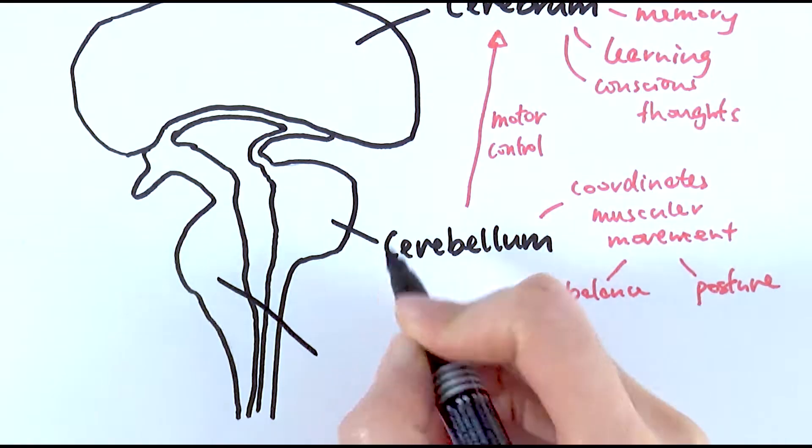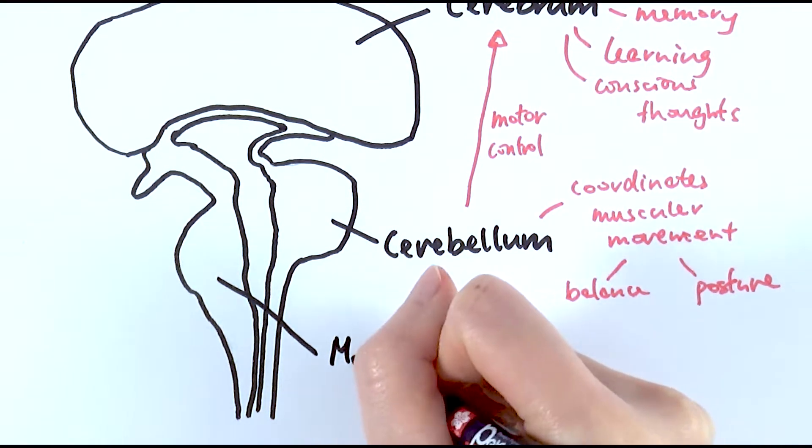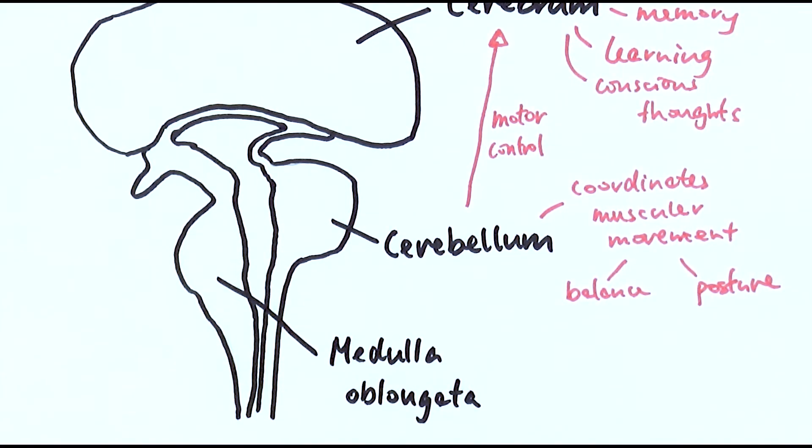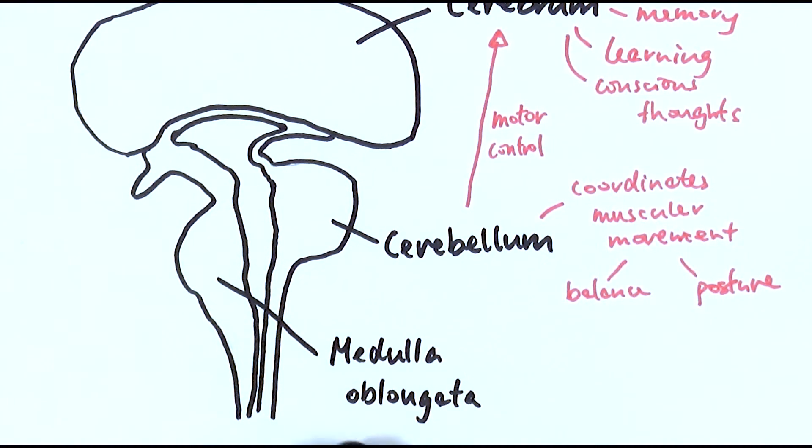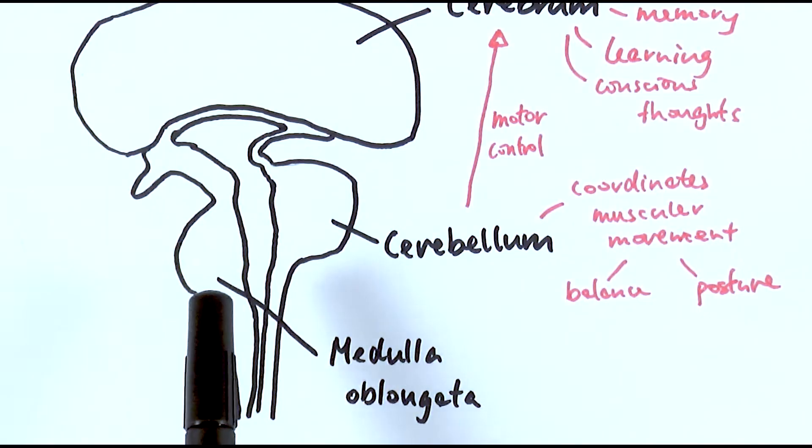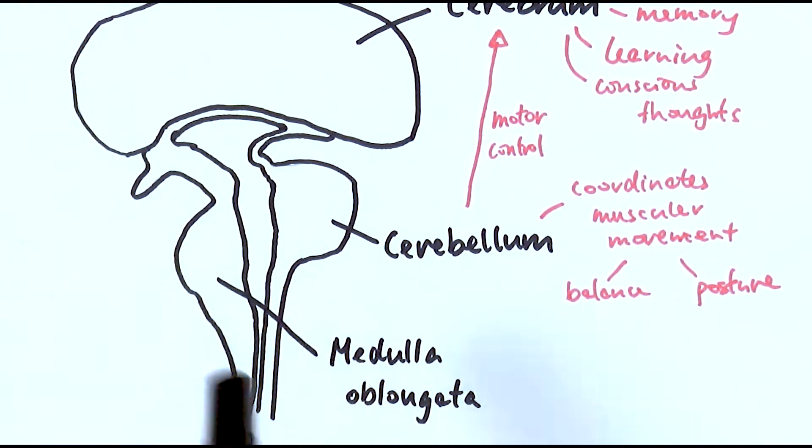Next we've got this particular part which is the medulla oblongata. Now you would come across multiple different structures in the body that also have the name medulla because medulla tends to mean the middle or the inner layer of it. So for example you can have the medulla in the kidneys as well. So it's very important when you talk about the structure of the brain, when you're referring to this particular part, you need to call it medulla oblongata for your answer to be very clear you're talking about the brain and not something else.